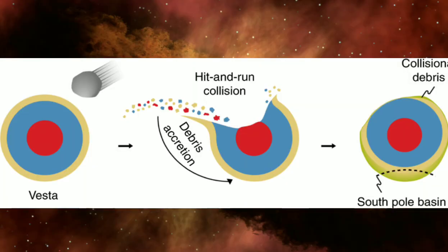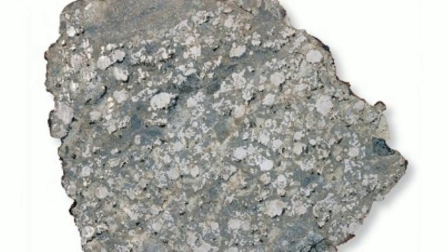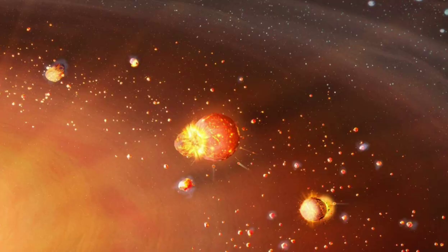Mesosiderites form when debris from a collision between two asteroids is mixed together. In the crash, molten metal mixes together with solid fragments of silicate rocks. Mesosiderites can therefore record the history of both meteorites and reveal a snapshot of the conditions required for asteroids to melt and form iron cores. Here are some sample images of mesosiderite-type stony iron meteorites.